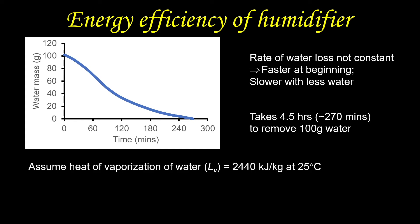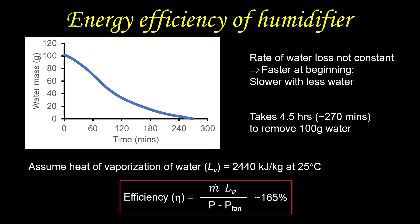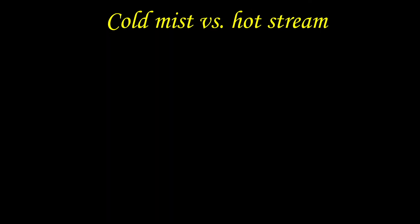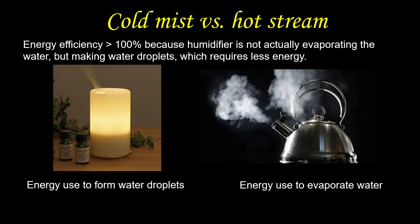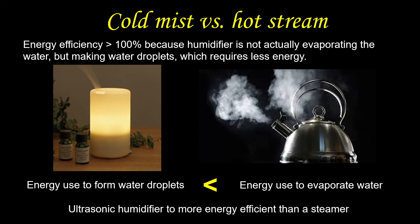If we assume all the water is evaporated, we can then calculate its energy efficiency, which is the heat needed to evaporate the water divided by the power of the humidifier. Surprisingly, the number turns out to be about 165%. So how can the efficiency be more than 100%? The reason is that the assumption in the calculation is wrong. The humidifier is actually not evaporating the water, but making water droplets. The energy used to form the water droplets is less than the energy used to evaporate the water. That's why the mist that comes off the humidifier is cold. In fact, the ultrasonic humidifier is more energy efficient than a steamer to remove water.